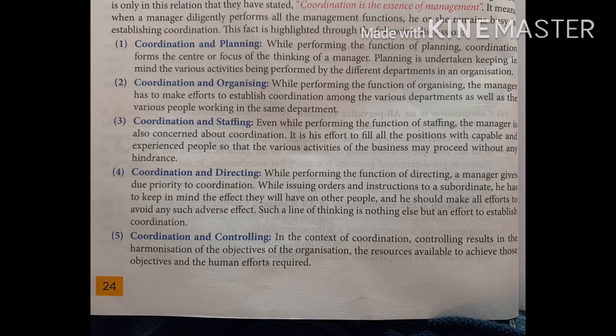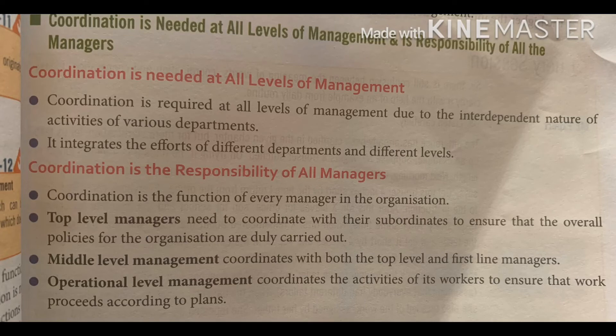There is also coordination between correction of deviation and achievement of objectives — corrective actions should be taken to eliminate the deviation so the objective can be achieved. Coordination makes planning more purposeful, organization well-knit, and controlling more effective. It is needed at all levels of management and is the responsibility of all managers — top, middle, and lower level.